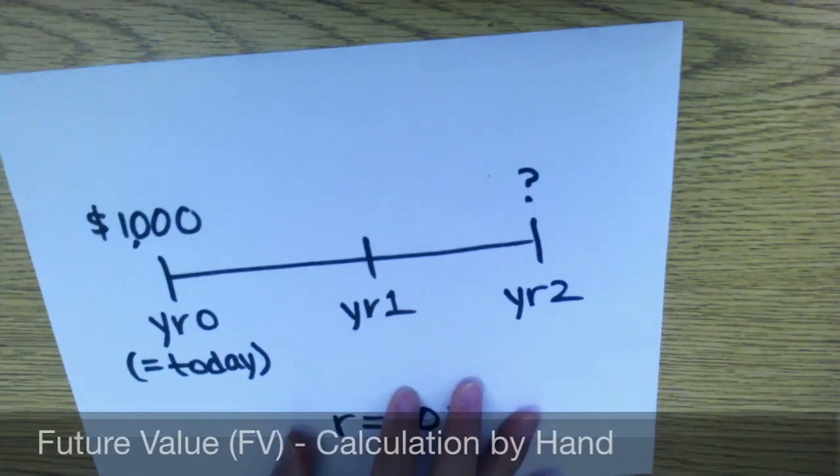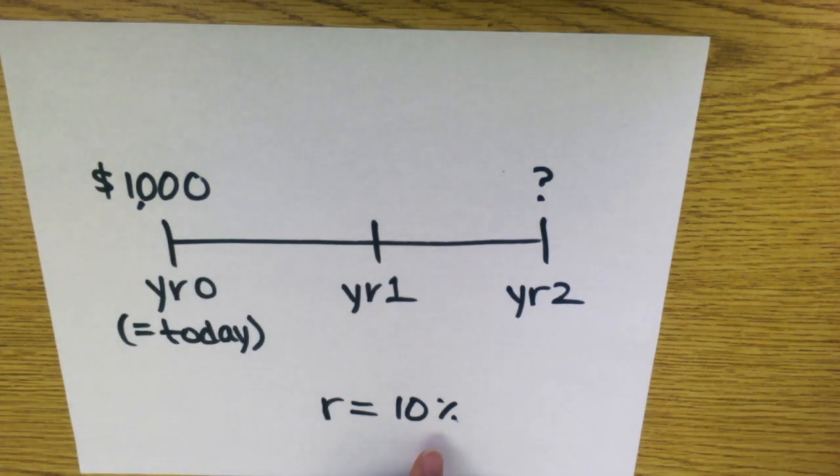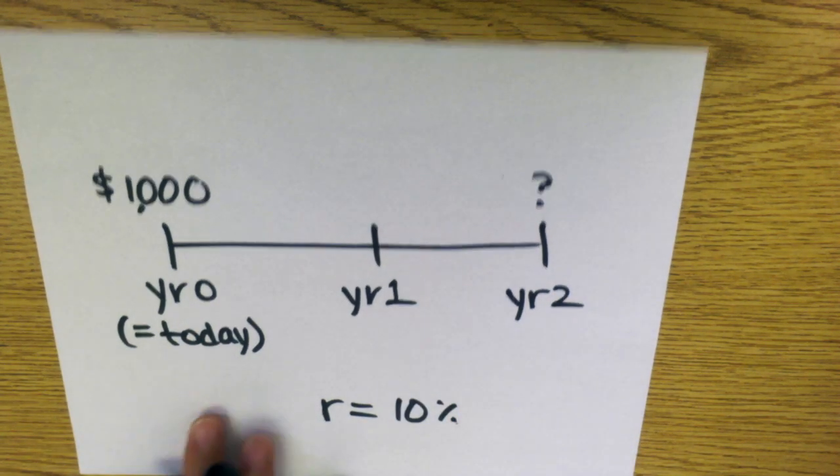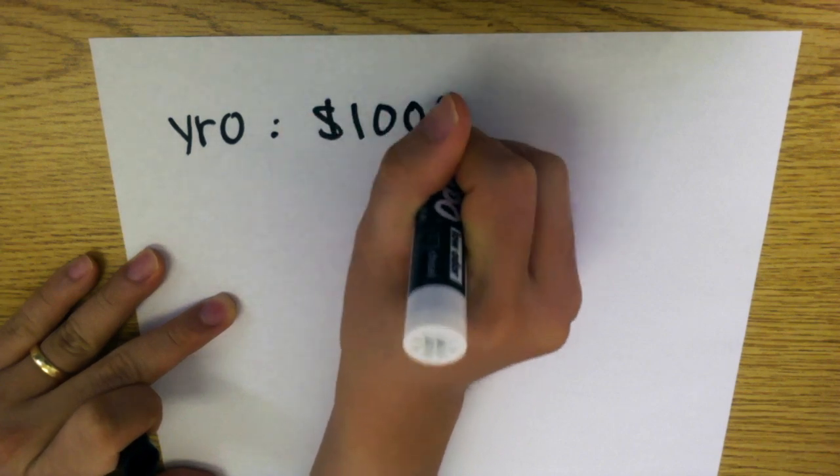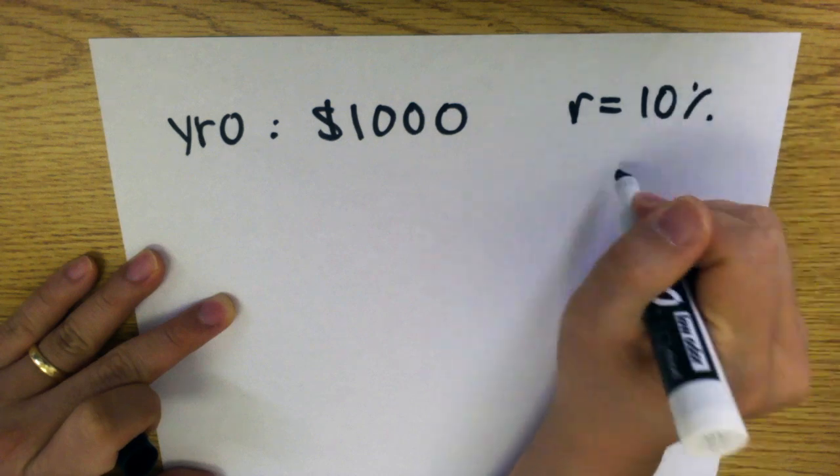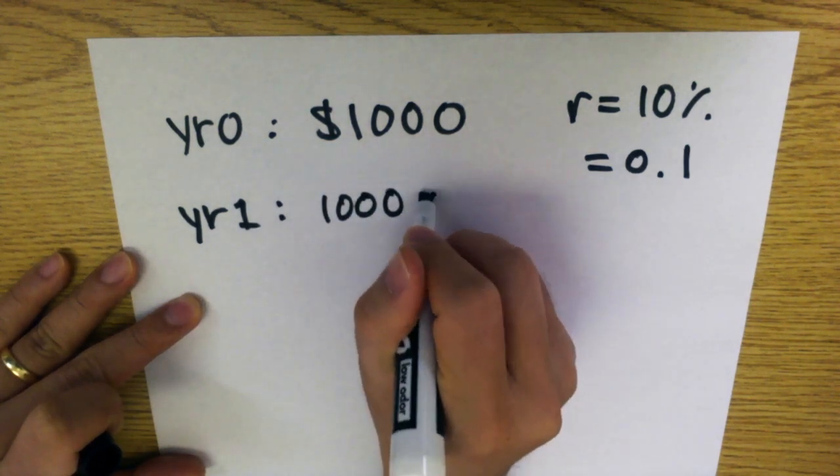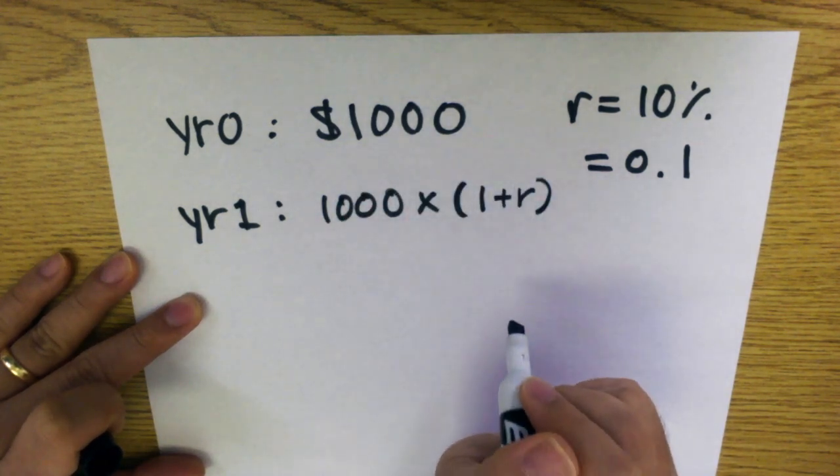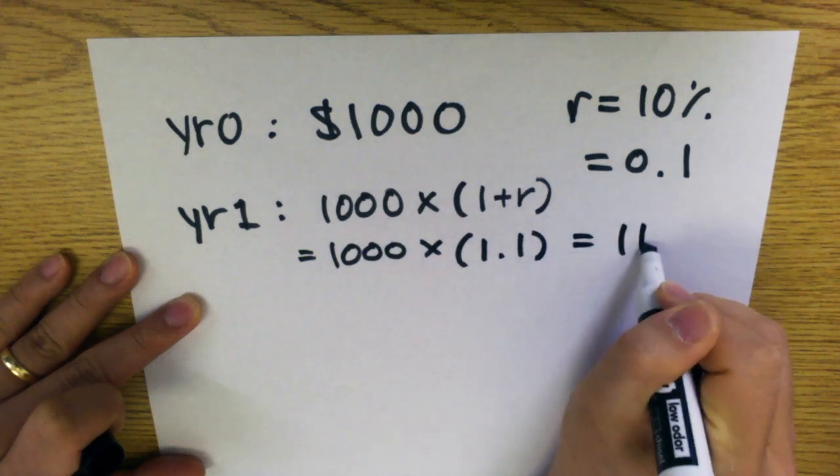So the first topic is future value. Suppose you have a thousand dollars and the annual interest rate is ten percent, and the interest is paid annually, so once a year. How much will you have in year two is the question. So at year zero you have a thousand dollars and your interest is ten percent, and in decimals that would be 0.1. So in year one you're gonna have $1,000 invested, which is the principal $1,000, plus the interest rate, that would be times 1.1.